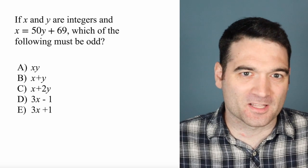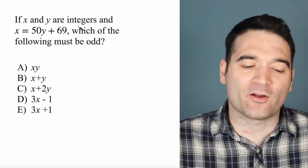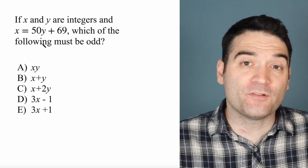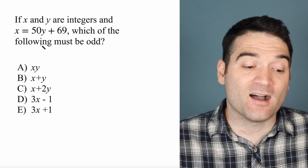Here's a GRE algebra question. Let's take a look. If x and y are integers and x equals 50y plus 69, which of the following must be odd?